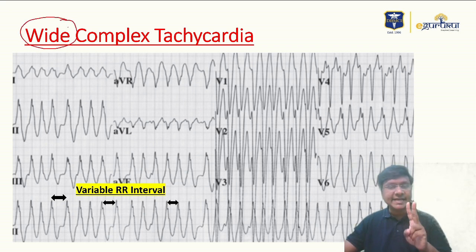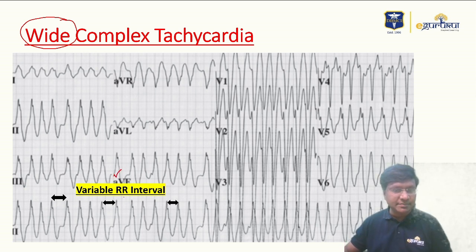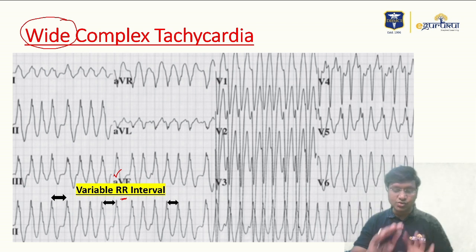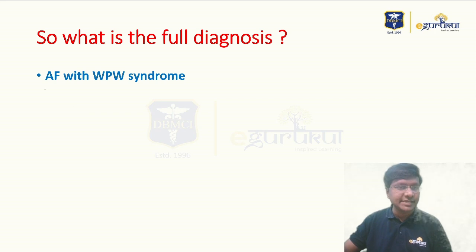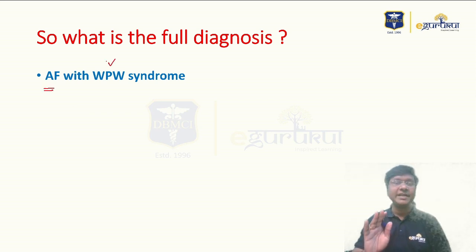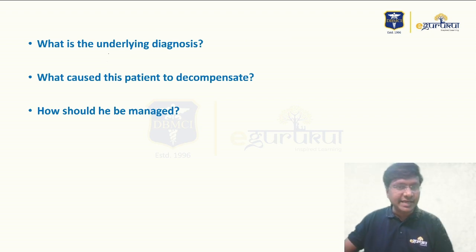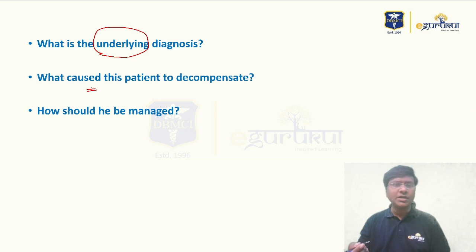The second important finding on the new ECG is the rhythm: there is a variable RR interval, meaning the patient is in atrial fibrillation. So the finding is atrial fibrillation with wide complex tachycardia. Overall, the full diagnosis is atrial fibrillation with WPW syndrome. That is the complete diagnosis of this clinical scenario.